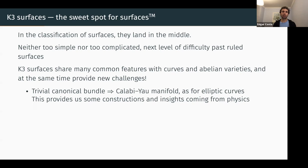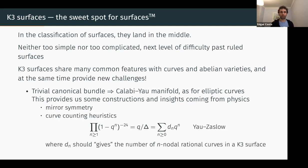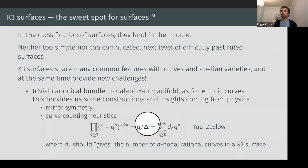One insight from physics is mirror symmetry — a duality where two K3 surfaces that have a common mirror will share arithmetic properties. For example, when two K3 surfaces are mirror they'll share the interesting part of the L-polynomial. Another thing from physics is interesting heuristics: Yau and Zaslow gave a curve-counting heuristic for the number of rational curves on a K3 surface by counting BPS states. The interesting part is that there are infinitely many rational curves on a K3 surface, and these numbers keep growing.